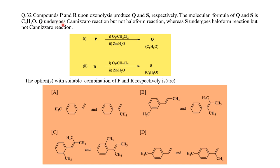Compounds P and R upon ozonolysis produce Q and S respectively. The molecular formula of Q and S is C8H8O. Q undergoes Cannizzaro reaction but not haloform reaction, whereas S undergoes haloform reaction but not Cannizzaro reaction. The question asks for the suitable combination of P and R.